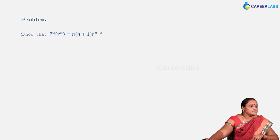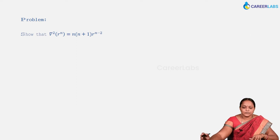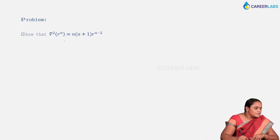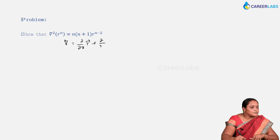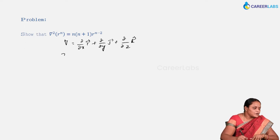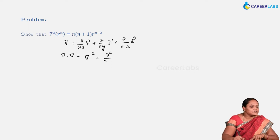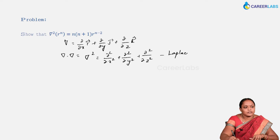Now let us see a problem: show that del squared r^n equals n(n+1) r^(n-2). So del dot del is nothing but del squared. Del, the vector differential operator, is given by (∂/∂x)î + (∂/∂y)ĵ + (∂/∂z)k̂. When you take a dot product again with respect to del, that is del squared, this is nothing but ∂²/∂x² + ∂²/∂y² + ∂²/∂z². We call this the Laplacian operator.